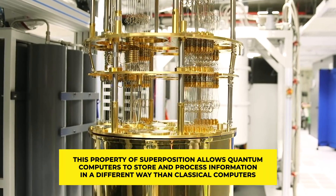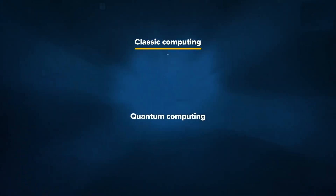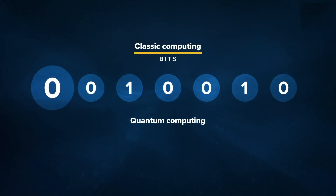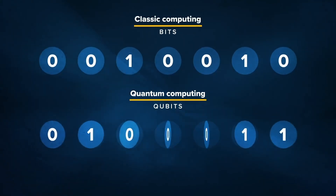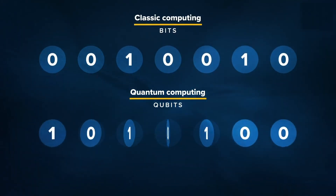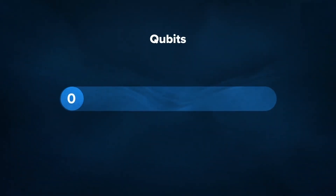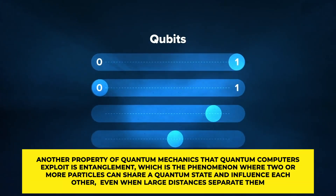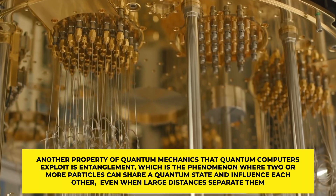This property of superposition allows quantum computers to store and process information differently than classical computers. While classical computers use bits, which can only have one of two values — zero or one — quantum computers use qubits, which can have both values at the same time. This means a quantum computer can perform multiple calculations simultaneously using the same number of qubits as a classical computer uses bits.